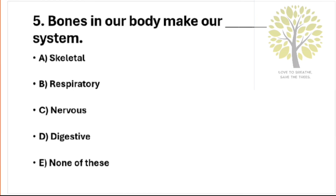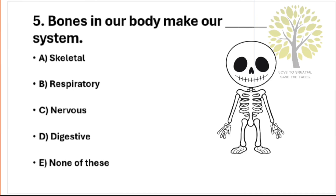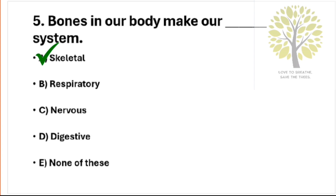Question number 5: Bones in our body make our dash system. Option A: Skeletal. Option B: Respiratory. Option C: Nervous. Option D: Digestive. Option E: None of these. The answer is Option A, Skeletal.